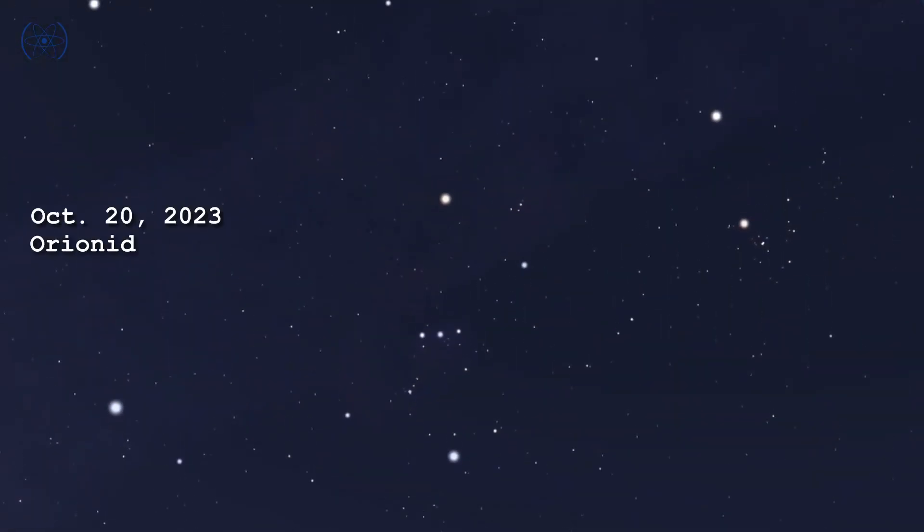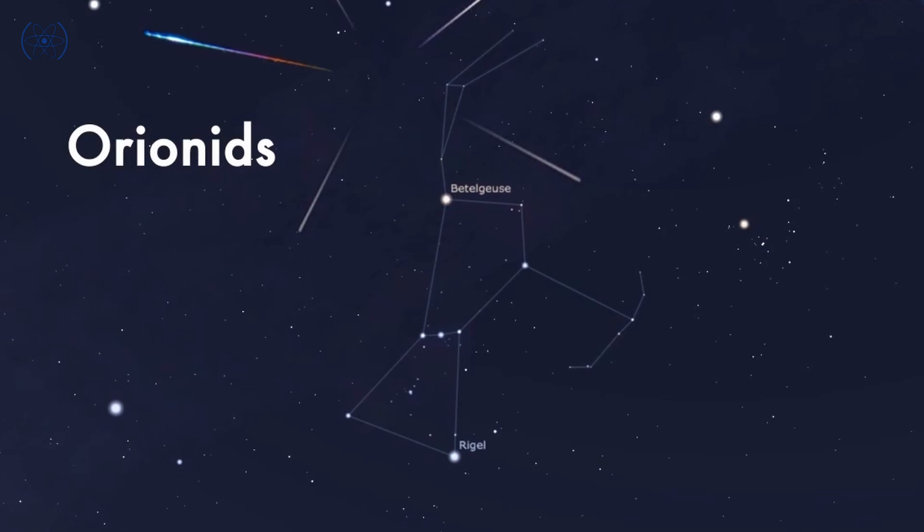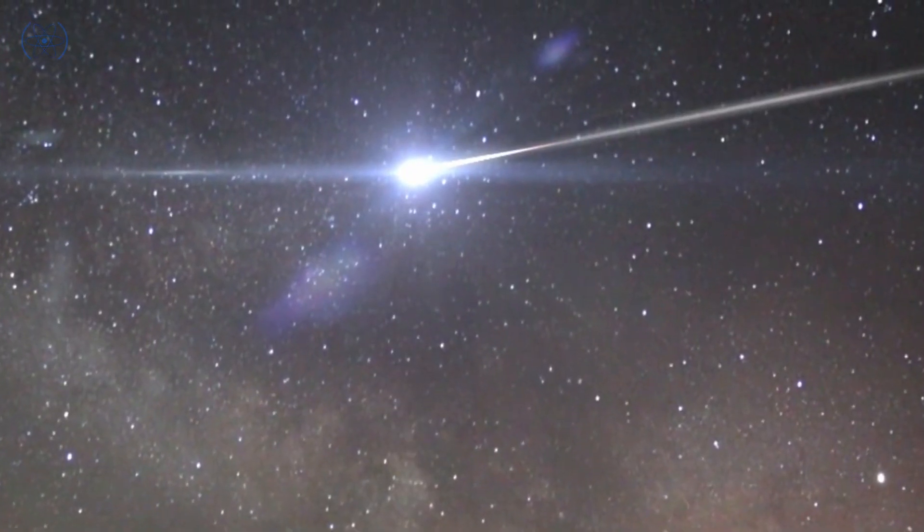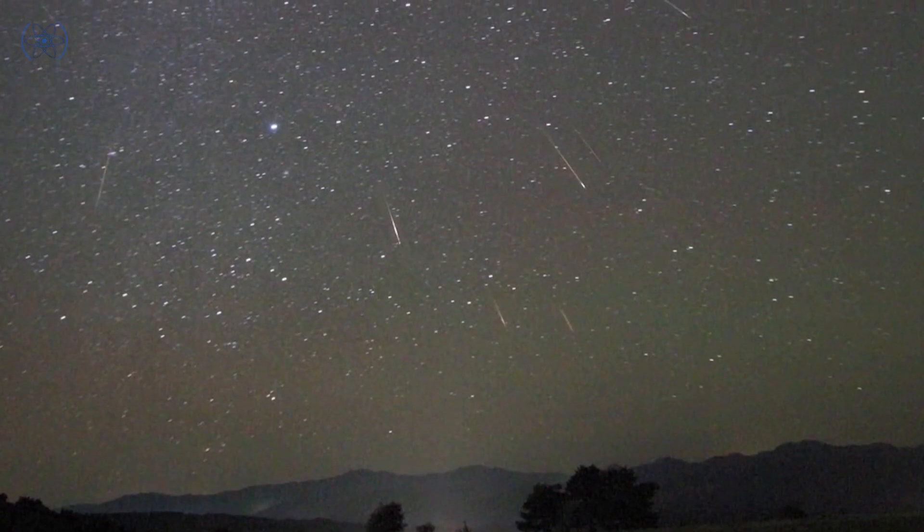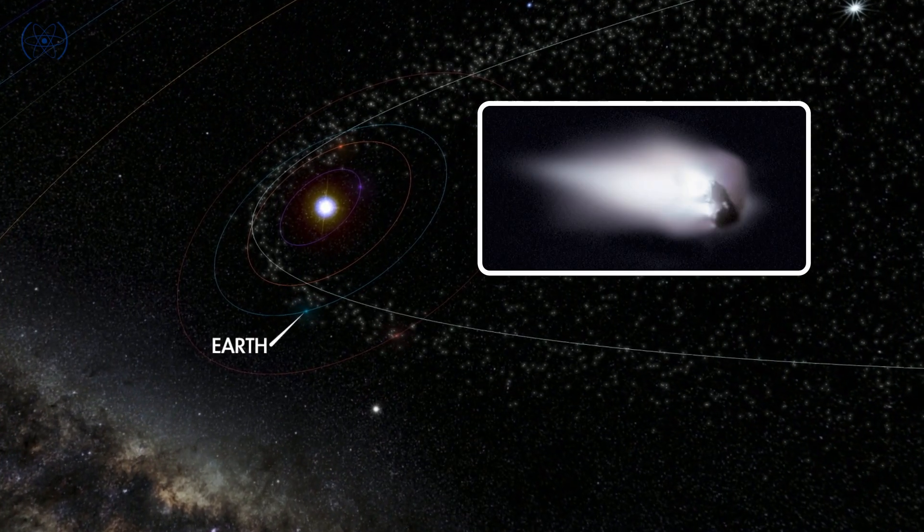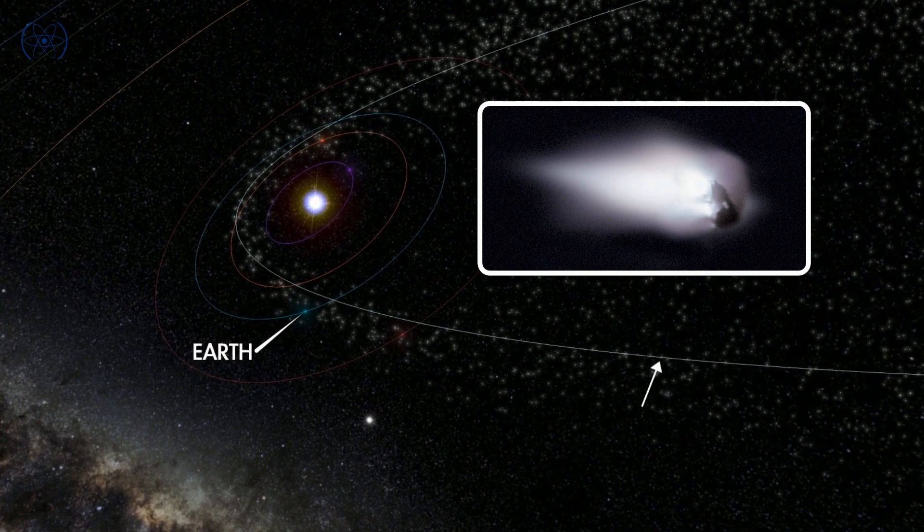The Orionid meteor shower will peak on the night of October 20th into the morning. Technically, the shower runs from October 2nd to November 7th. This meteor shower is produced by dust grains left behind by Halley's Comet, which passes Earth roughly once every 76 years. It last visited us in 1986 and is predicted to return in the year 2061.